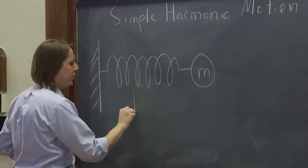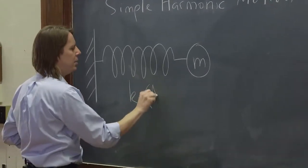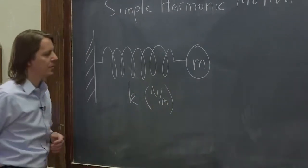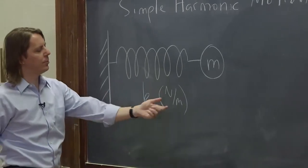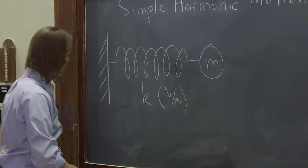You may recall from mechanics that we describe a spring with a spring constant k in newtons per meter. That's how you get the force in newtons from the deflection in meters, and the mass, of course, is in kilograms.